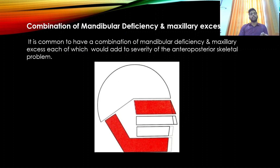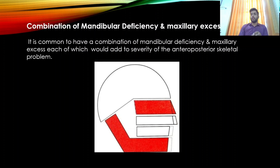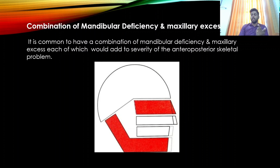The third type is a combination of mandibular deficiency and maxillary excess — a prognathic maxilla with a retrognathic mandible. Having both conditions adds to the severity of the anteroposterior skeletal problem, as shown in the diagrammatic representation.